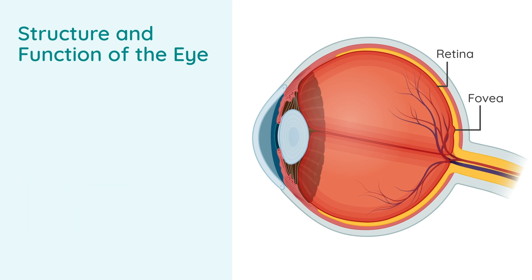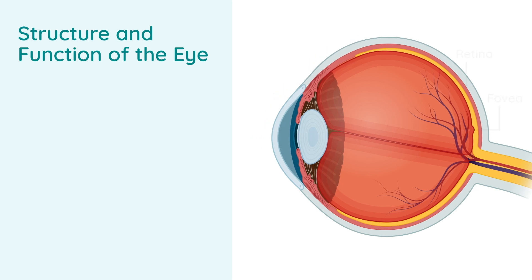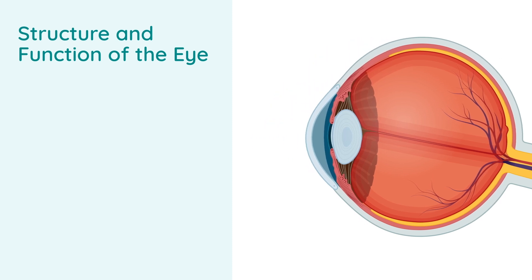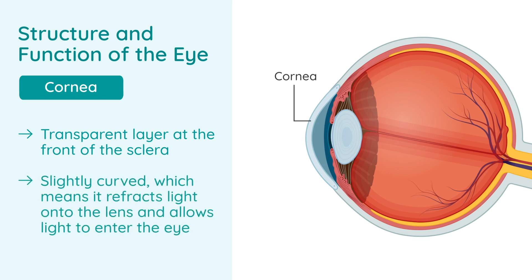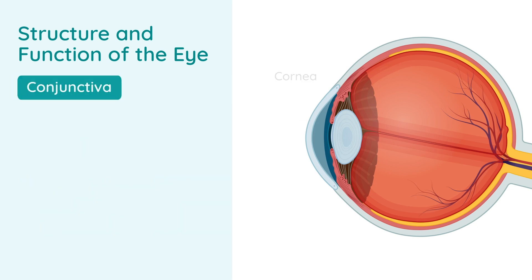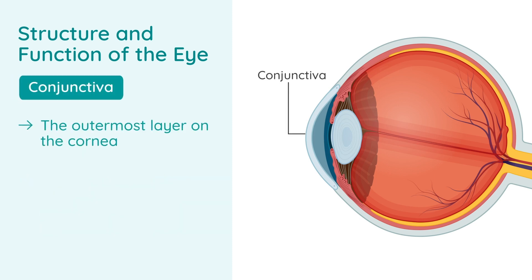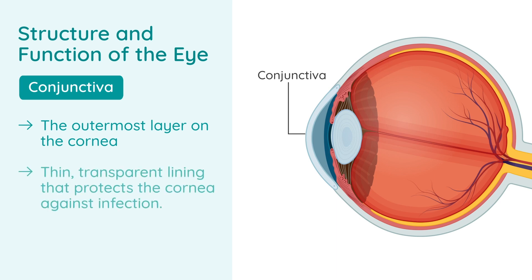The very front part of the eye is a transparent area known as the cornea. It's a transparent layer at the front of the sclera. It's slightly curved, which means it refracts light onto the lens and allows light to enter the eye. The conjunctiva is the outermost layer on the cornea — it's a thin, transparent lining that protects the cornea against infection. It also lubricates and moisturizes the eye.